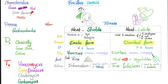Bacillus cereus is a gram-positive rod, spore-forming and motile. Disease: gastroenteritis. We have the emetic form where you vomit plus some nausea and cramps, and the diarrheal form where you have diarrhea plus some nausea and cramps. The emetic form is caused by a heat-stable toxin; the diarrheal form by a heat-labile toxin. The heat-stable toxin is resistant to heat — so heat will not kill it — and it's also resistant to proteolysis, so proteolytic enzymes will not kill it.